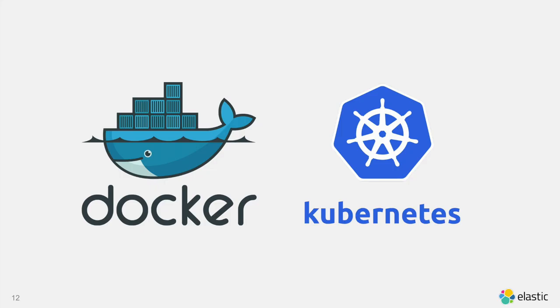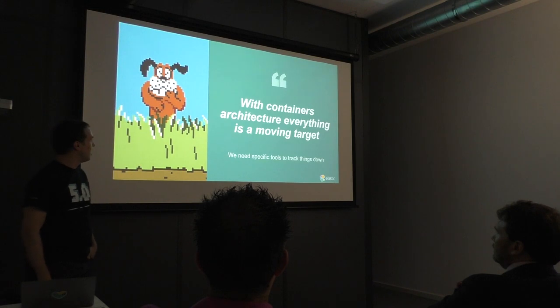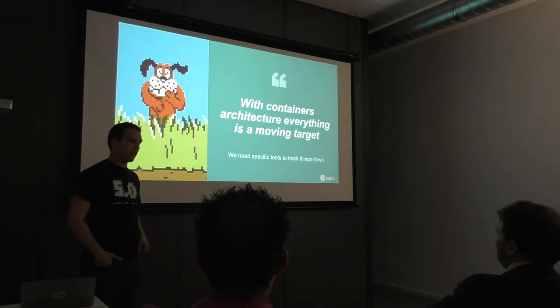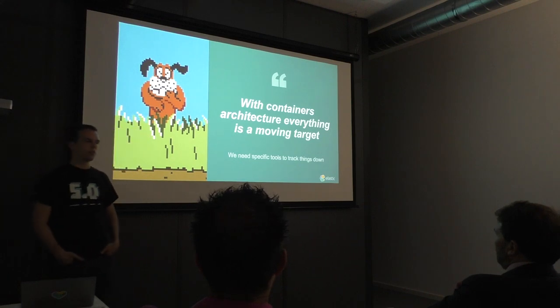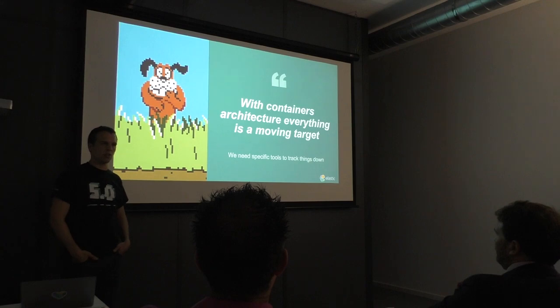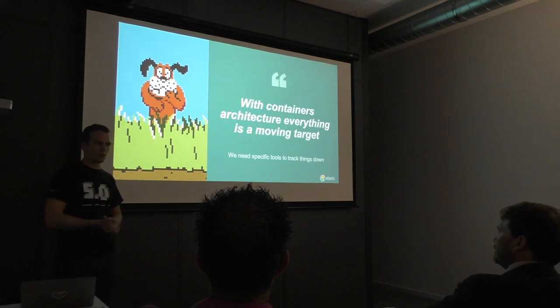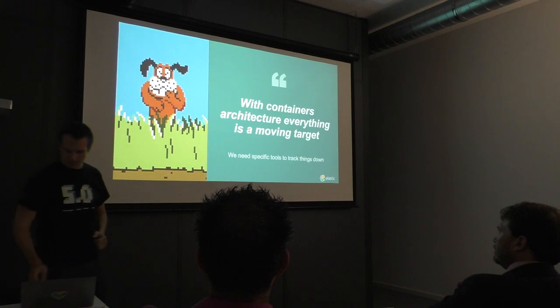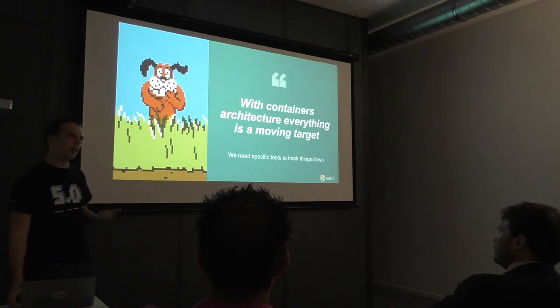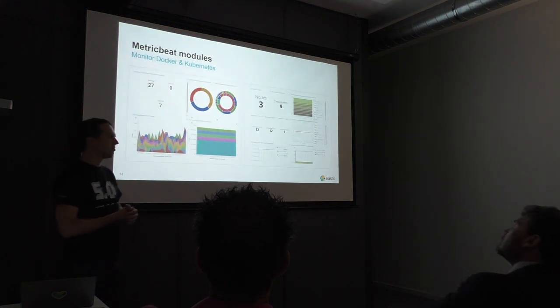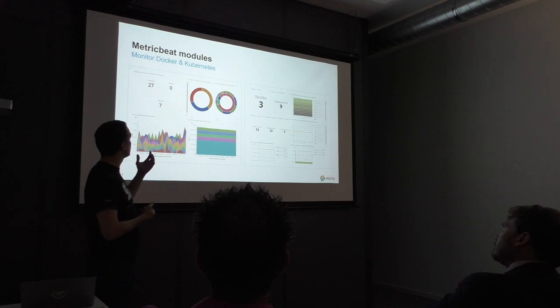I ran through that quickly because now we get to the interesting stuff: Docker and Kubernetes. With Docker, as mentioned in the beginning, monitoring and logging becomes very interesting again because it's a moving target. When you try to monitor a container, potentially it has already disappeared. In MetricBeat and FileBeat, one of the modules is Docker and another is Kubernetes — it's not only monitoring the service inside like Nginx or your own application, but also how Docker and Kubernetes are doing.